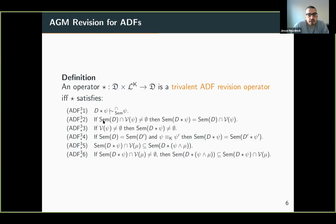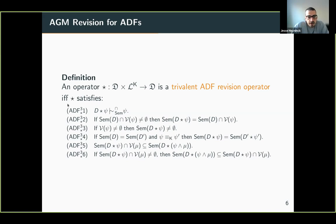To give a bit more detail on what the AGM-like postulates look like, I'll walk through one example. The postulate of success, converted to our setting of revising ADFs by a formula, says: if we revise an ADF D by the formula psi, then psi should hold in all of the interpretations of the revised ADF selected by the semantics we have chosen. The other postulates I can walk you through in the poster session.